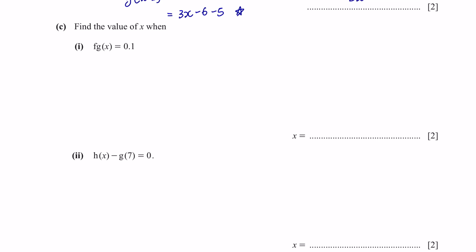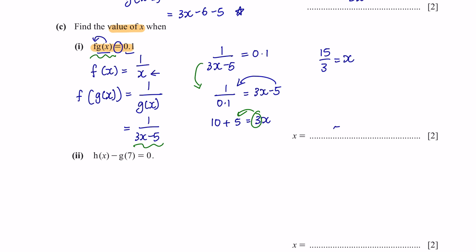Next, part C. Find the value of x when f(g(x)) equals 0.1. So we're going to substitute function g into f. The function of f is 1 over x. So instead of x, we're going to put the function g(x) into it. So this would be 1 over, function g(x) is 3x minus 5. So this equation here is f(g(x)), and it is equal to 0.1. Now we're going to rearrange to get what is the value of x. So I'm going to shift it like this first, and then bring 5 to the other side and bring 3 to the other side. And I will get x equal to 5.